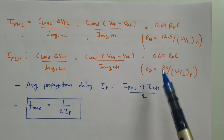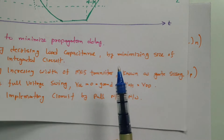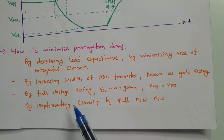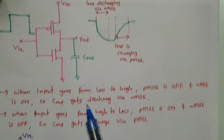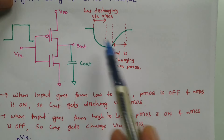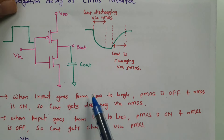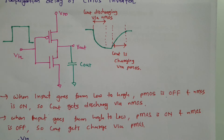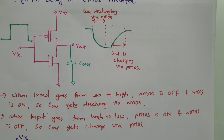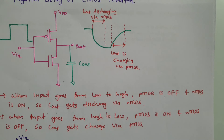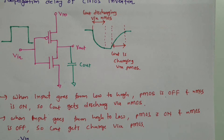That is how we calculate propagation delay. I have explained how to minimize it using four methods, the graphical representation, the working principle, and the calculation formulas. I hope you have understood this video on propagation delay for CMOS inverter. Thank you for watching. Please share your valuable suggestions so I can make future videos that resolve your queries.